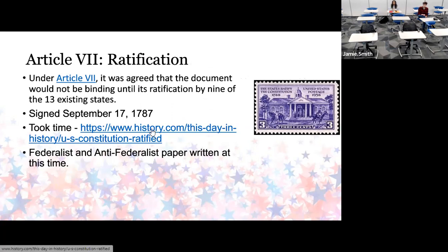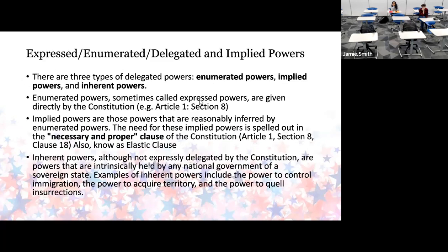If you want more information, there are websites where you can read how the ratification happened. People did not want to ratify it because when they read the seven articles they said there was no protection for themselves — which is why we got the Bill of Rights. Between the time they finished writing it and the time it was ratified, they were writing the Federalist and Anti-Federalist papers to argue both sides.